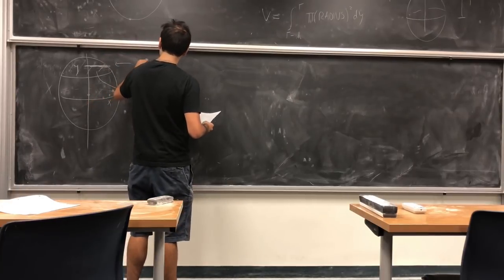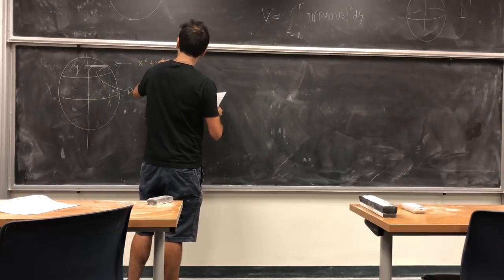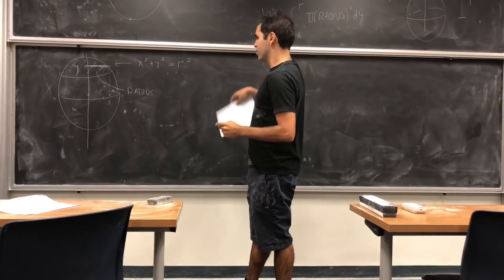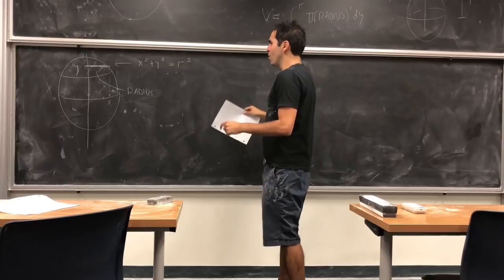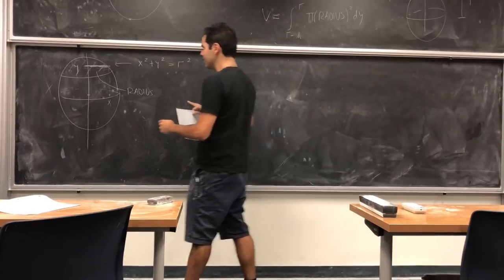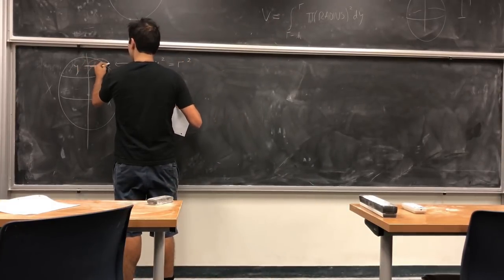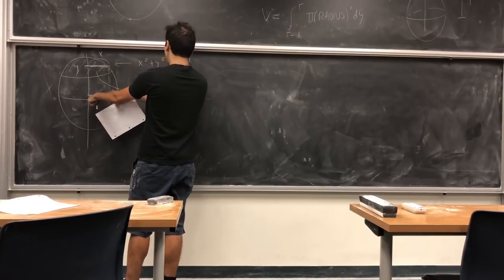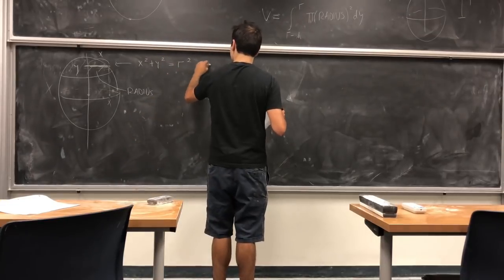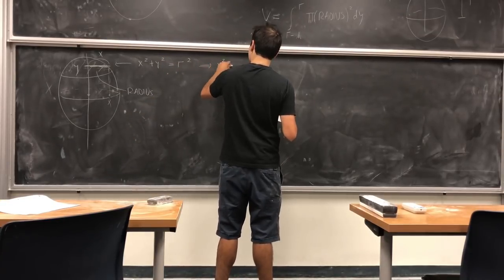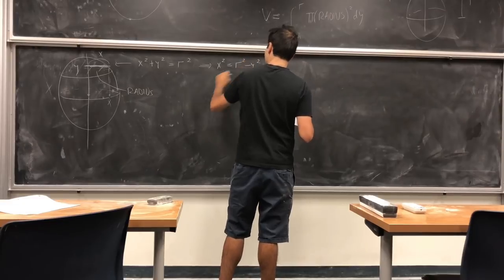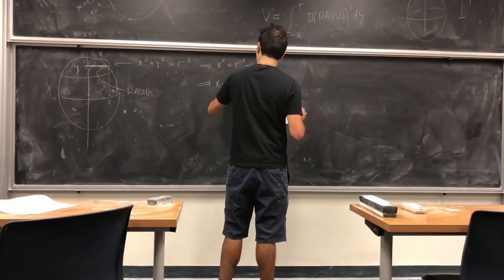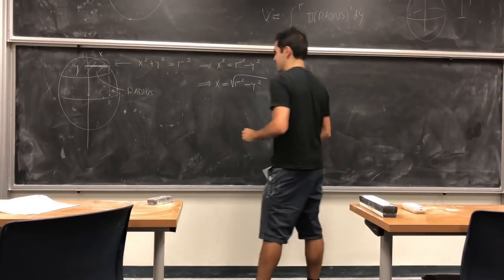So the equation of the circle. And remember, you want to solve for x in terms of y. Because if you look at this picture, the radius is precisely your point x. So you get x² = r² - y². But because x is positive, x becomes √(r² - y²).